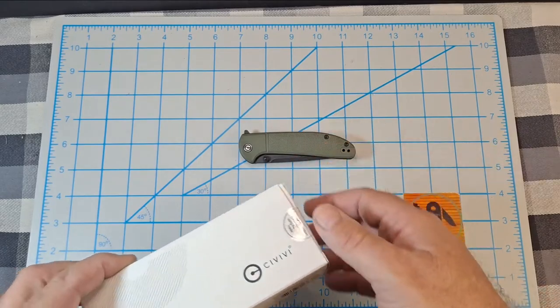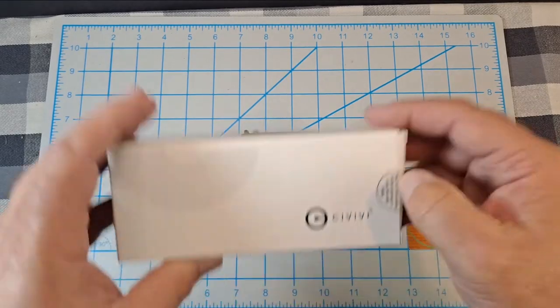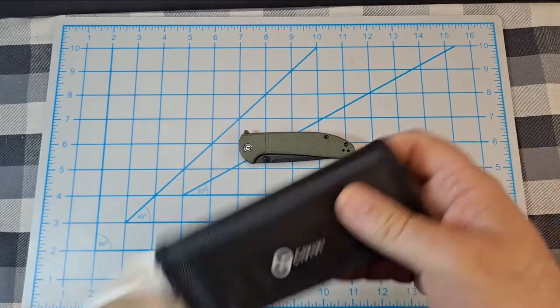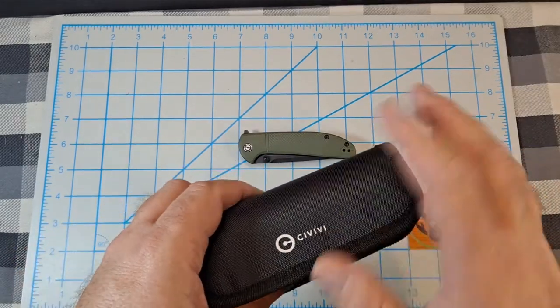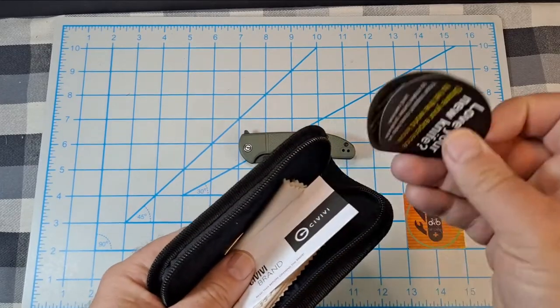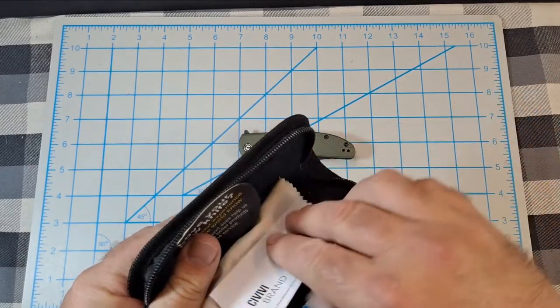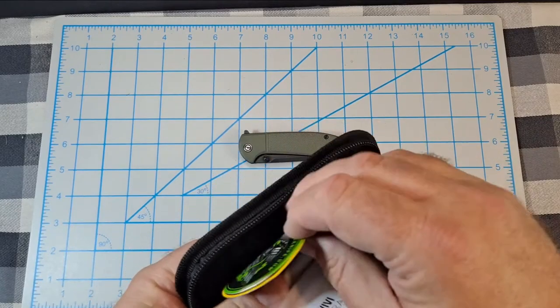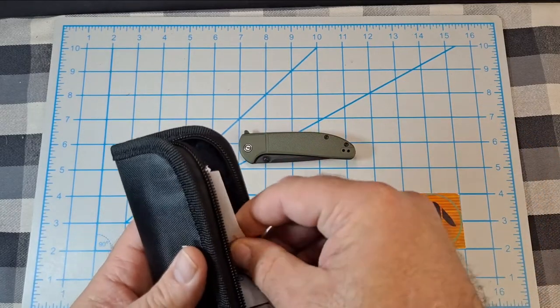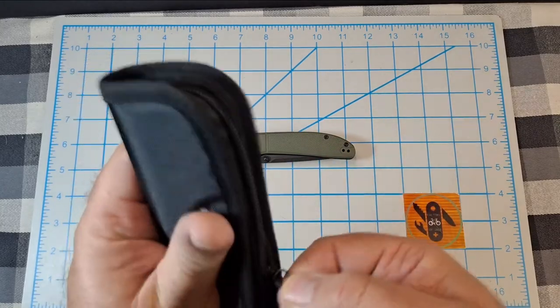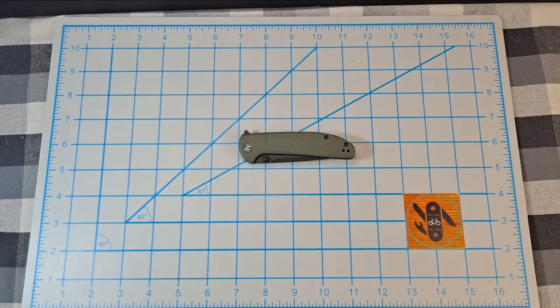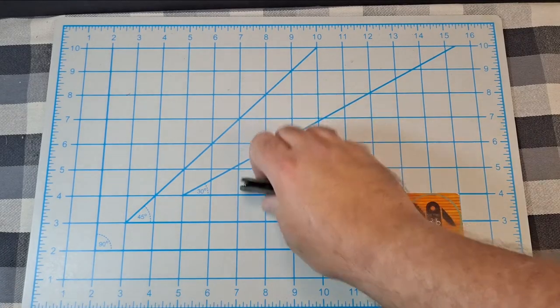With the Badlands Vagabond you still get the same Civivi box, the same pouch, you get a couple stickers, you get the paperwork, you get the cleaning cloth. So forty dollar knife, which is a good knife - they didn't skimp on none of the extras. That's awesome.